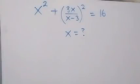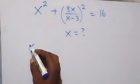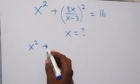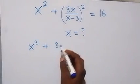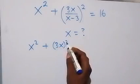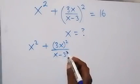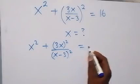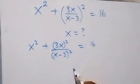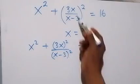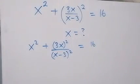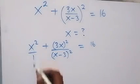Hello, you are welcome. How to solve this nice algebra problem: from here, to find the value of x, we can write this as (x² + 3x)² over (x - 3)² equals 16. And from the law of indices, this has been separated and here we have this as over one.